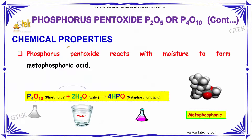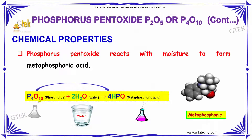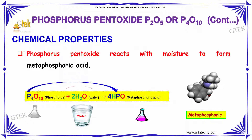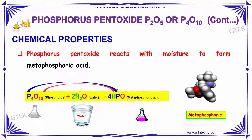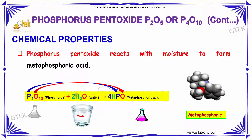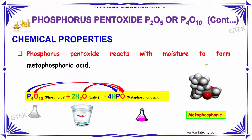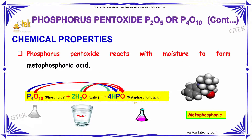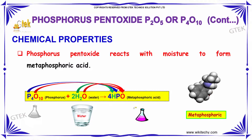If we talk about the physical properties of Phosphorus pentoxide, it's a white solid and an acidic oxide. If we talk about the chemical properties, Phosphorus pentoxide reacts with water, or reacts with moisture, to form metaphosphoric acid.